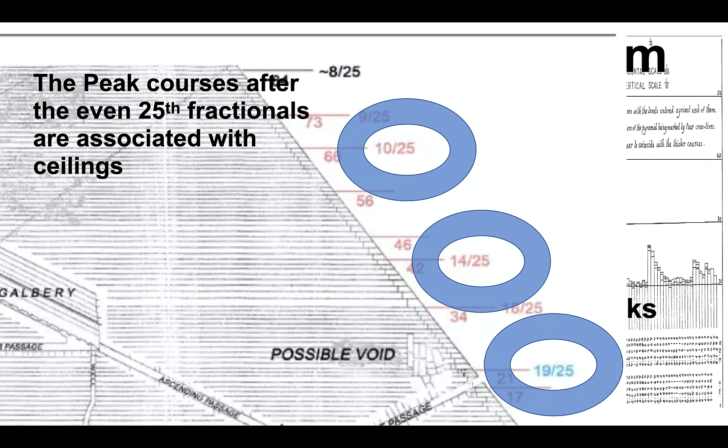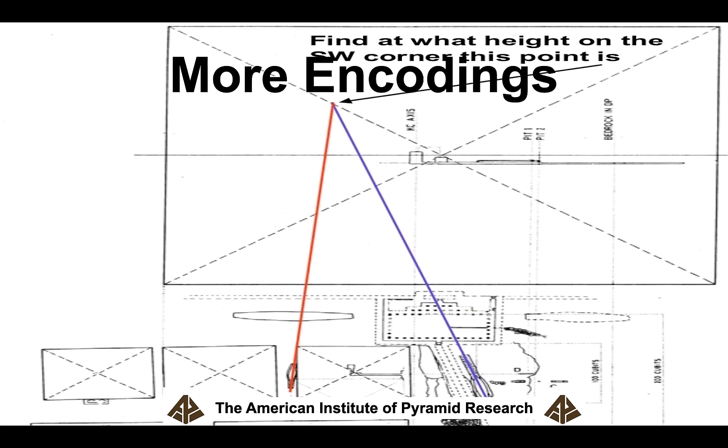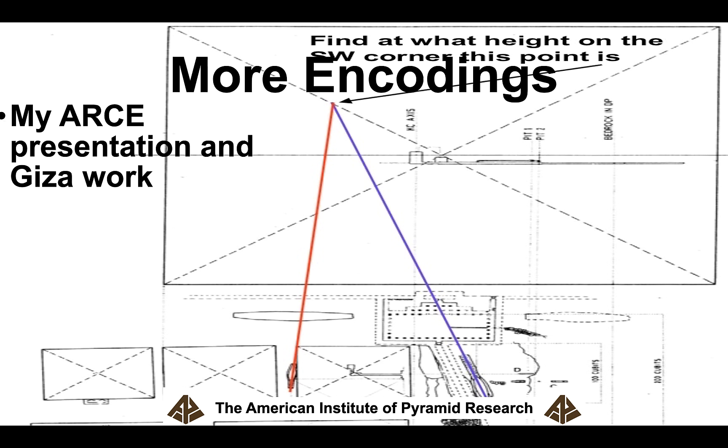The pre-peak courses — the 25th fractional courses — signal chambers. For instance, the 19/25th course precedes the possible void chamber shown by the muon scans. Sefzada suggests we could potentially find some of the hidden chambers in the Great Pyramid, because the known chambers follow this clue from Hemiunu — so why not extend it to the upper chambers?